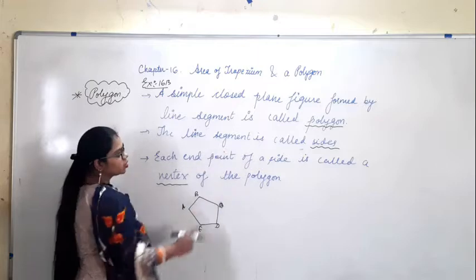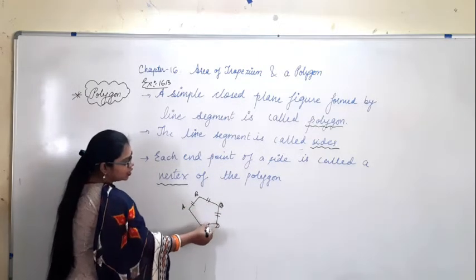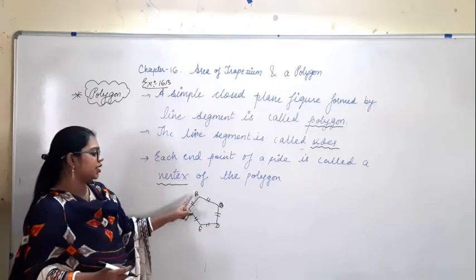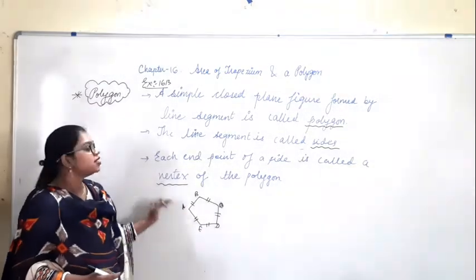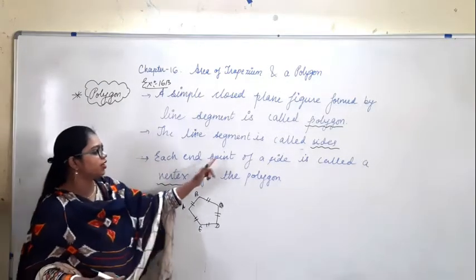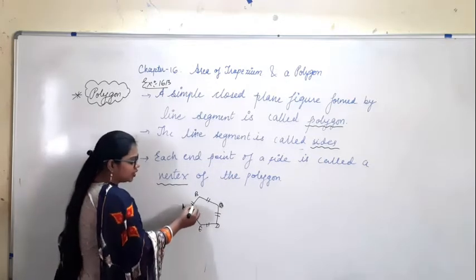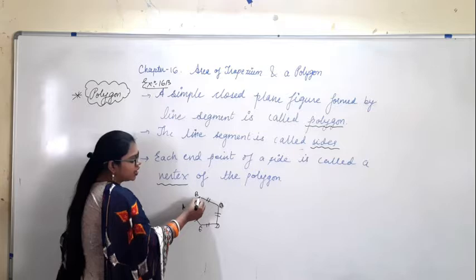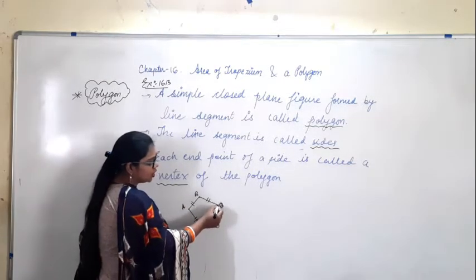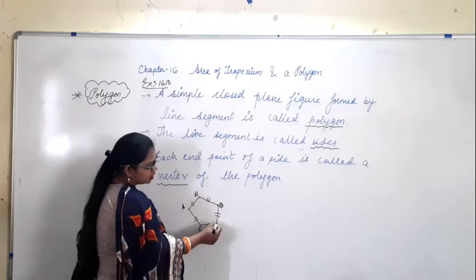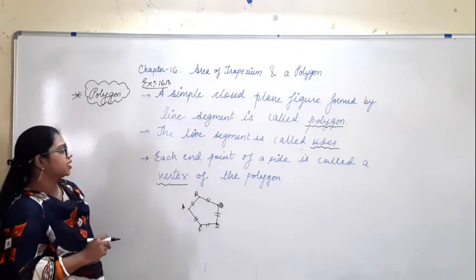Second point: the line segments are called the sides of the polygon. AB is the side, BC is the side, CD is the side, DE is the side, then EA is the side of the polygon. Each endpoint of the side is called a vertex. A is the starting and B is the end, so this endpoint is known as the vertex. For BC, C is the vertex; for CD, each endpoint — both points — are known as the vertex.